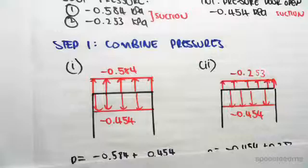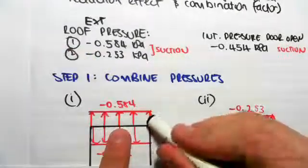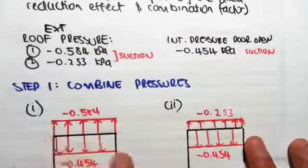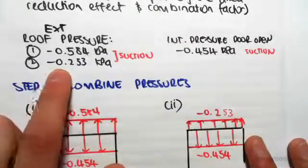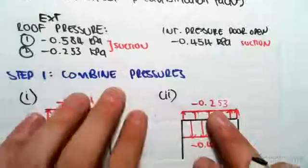We know that suction, as we've said in previous videos, is a pull. So externally a pull looks like this, internally the pull looks like this. That's for case one. For case two we have an external roof pressure of minus 0.253 kPa and still an internal pressure of minus 0.454 kPa.